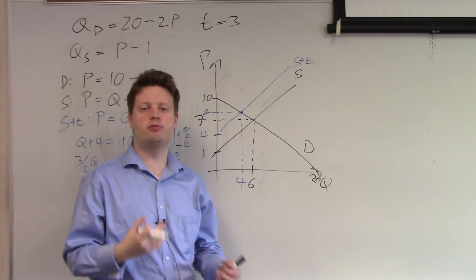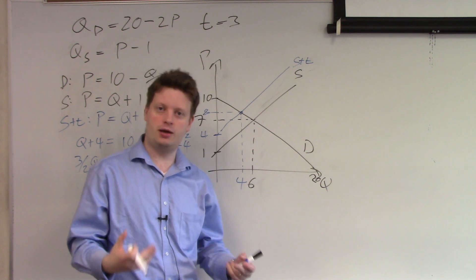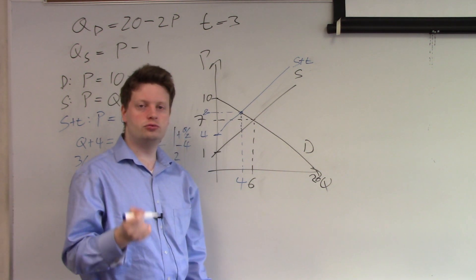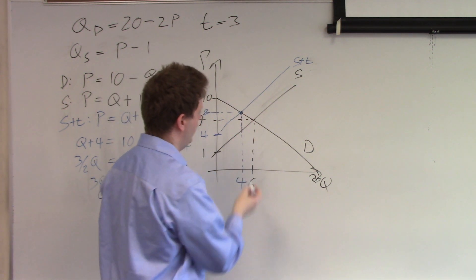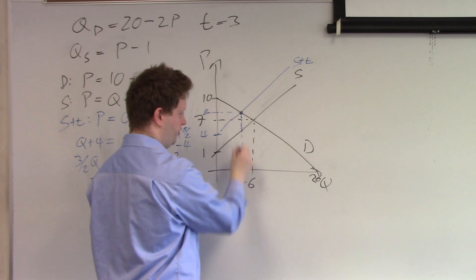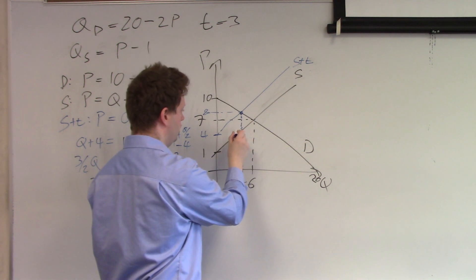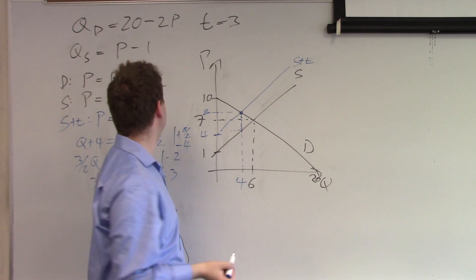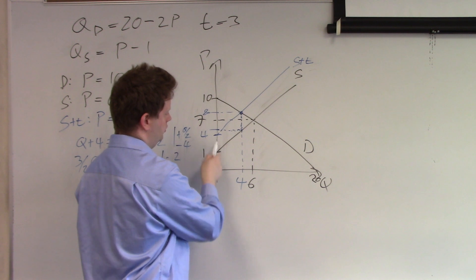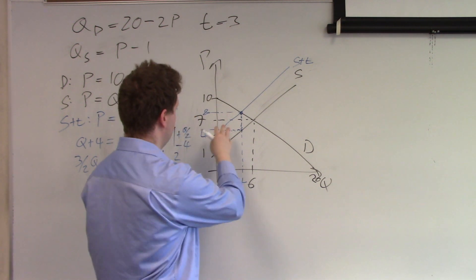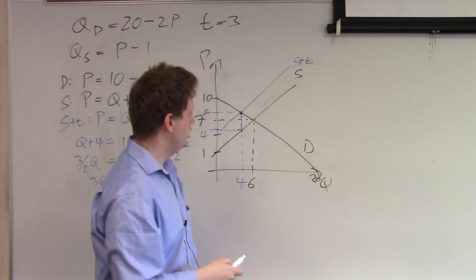So we need to calculate what is the price producers get. How much money, if I'm producing this good, how much money am I actually seeing? To find out what is the price producers get, we need to go down and look at where this quantity we found with the tax, that's the quantity 4, intersects with our supply. And we can already see it will be above 4 based on the graph.